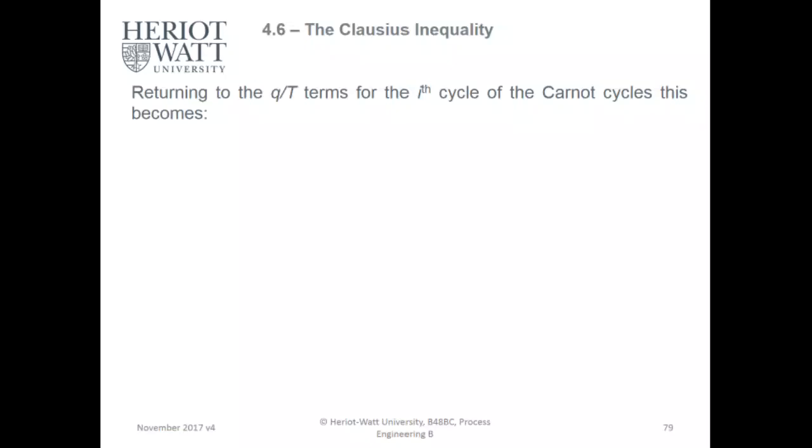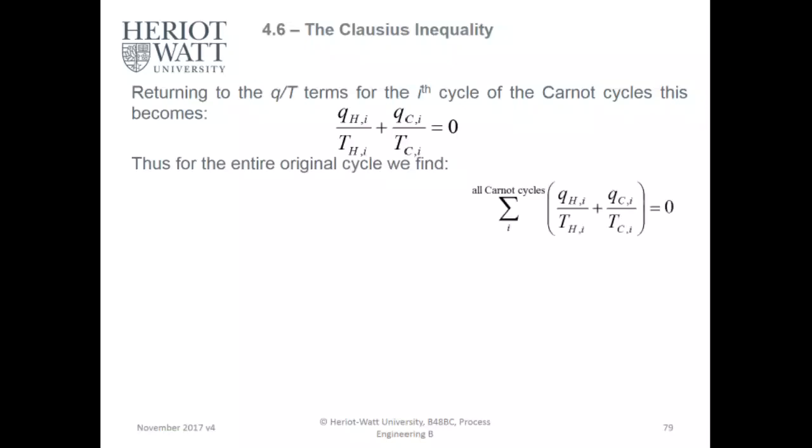Returning to the Q over T terms for the Ith cycle of the Carnot cycles, this becomes QHI over THI plus QCI over TCI equals zero. For the entire original cycle, the sum of the Carnot cycles to meet that specification equals QHI over THI plus QCI over TCI. You can have as many Carnot cycles with different parameters and effectively use loops to calculate and balance that equation to zero at any point.